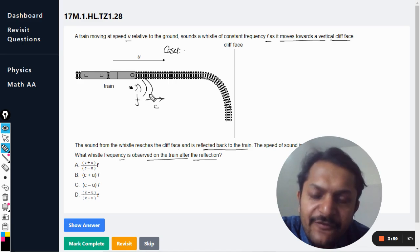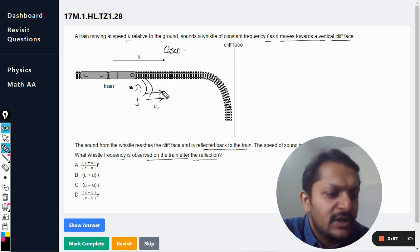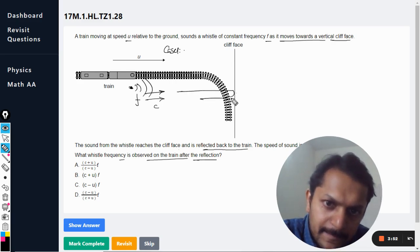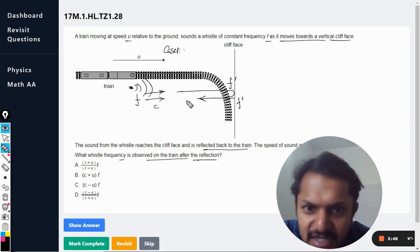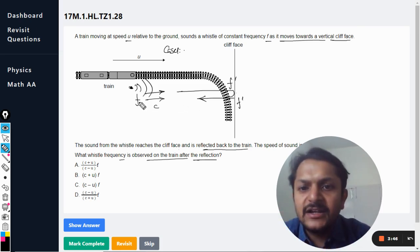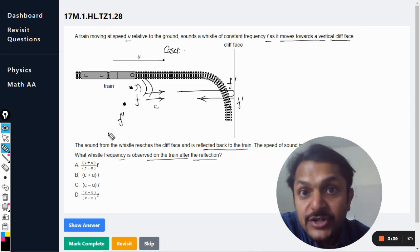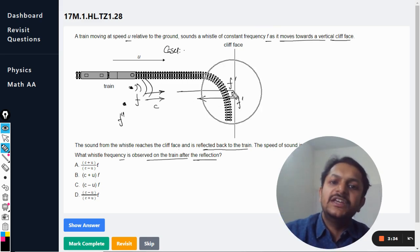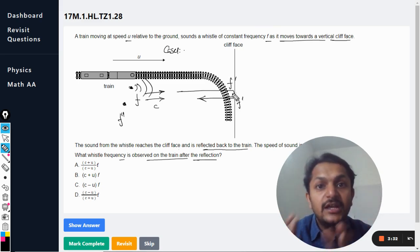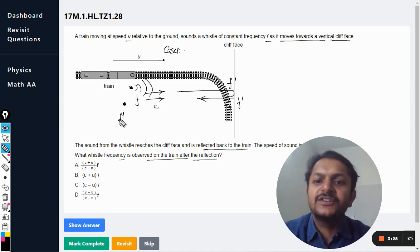Case number one is that frequency f is emitted, and what is the frequency that is heard by the cliff? So this frequency is f dash. Now f dash is again emitted by the cliff, and the receiver, the train, is now acting like receiver. So this time it is going to receive f double dash. So the frequency in the starting is f, then it is received here as f dash, it is again emitted by the cliff as f dash, and it is recorded by the train as f double dash.